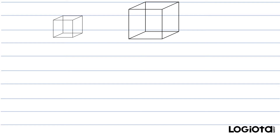To understand this concept, I've taken the analogy of a box, and here the box is in the form of a cube. Let's name them: this is box A and this is box B. The edge length for box A is L, and for box B the edge length is 2L, so this is twice the first one.